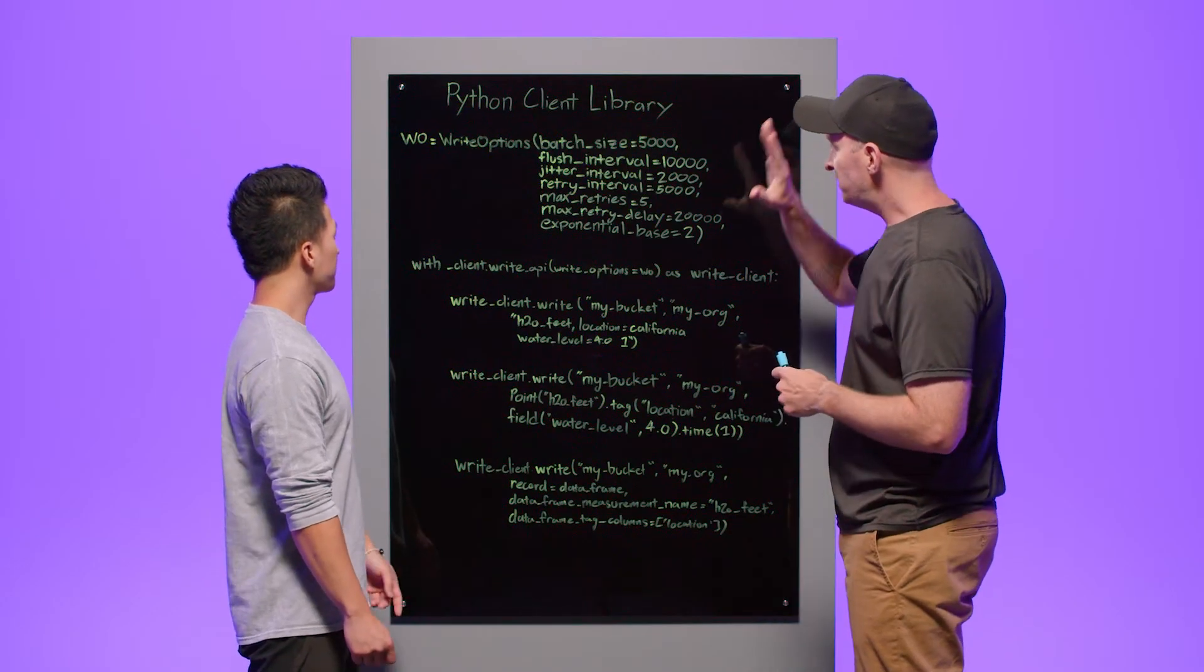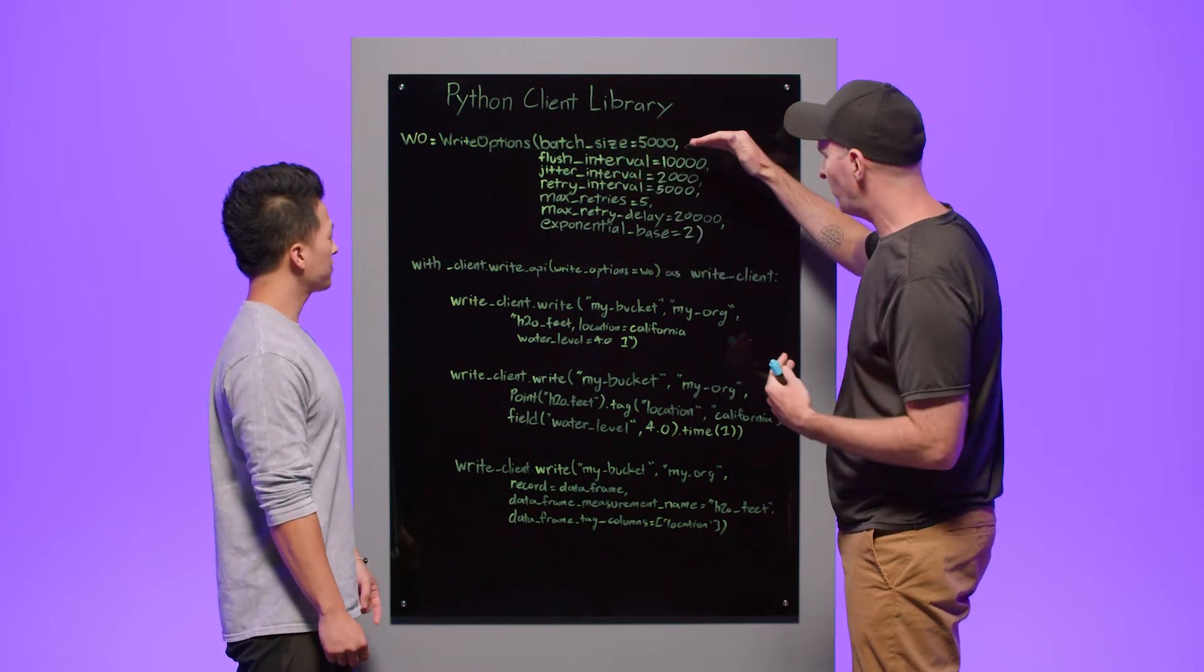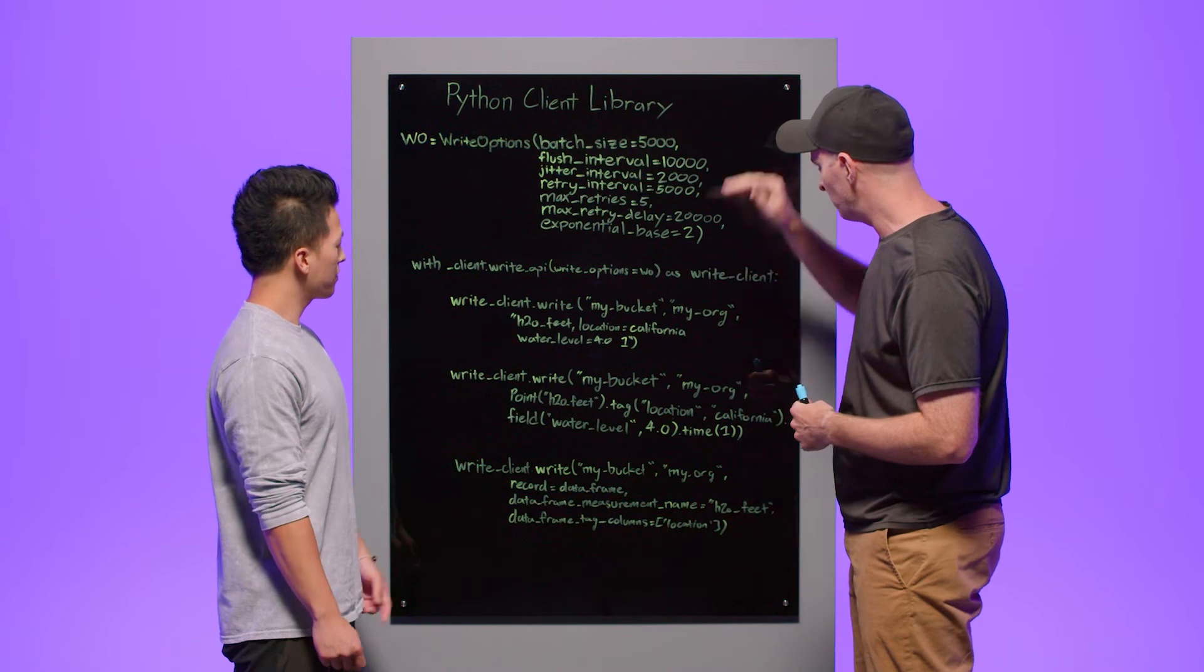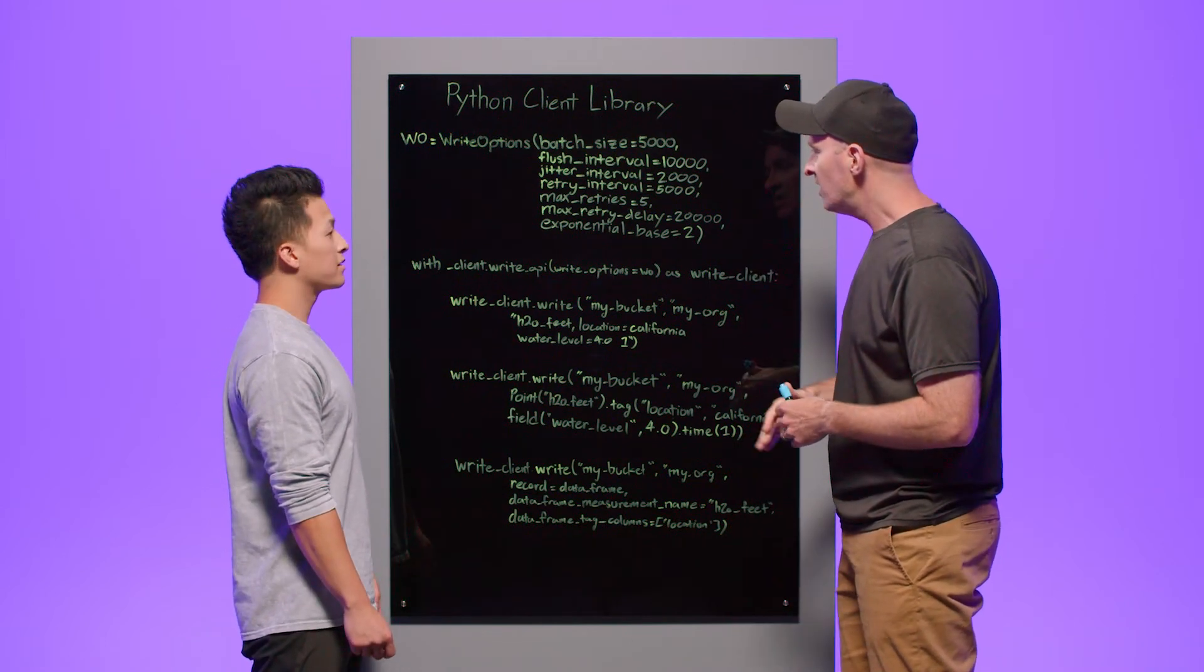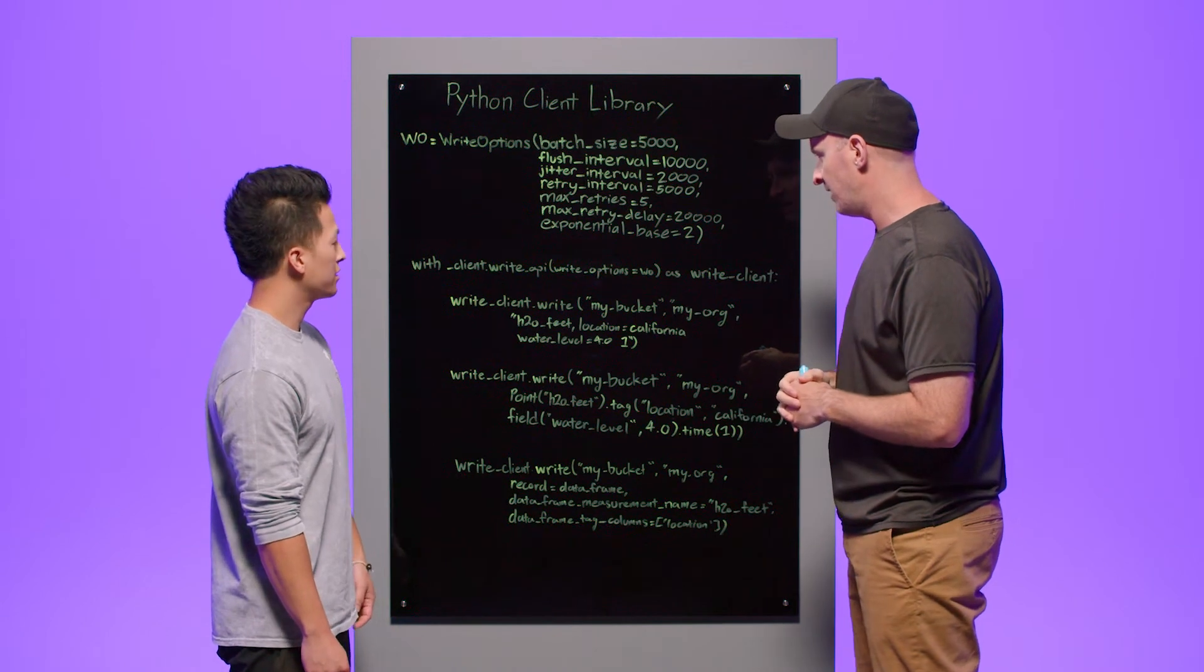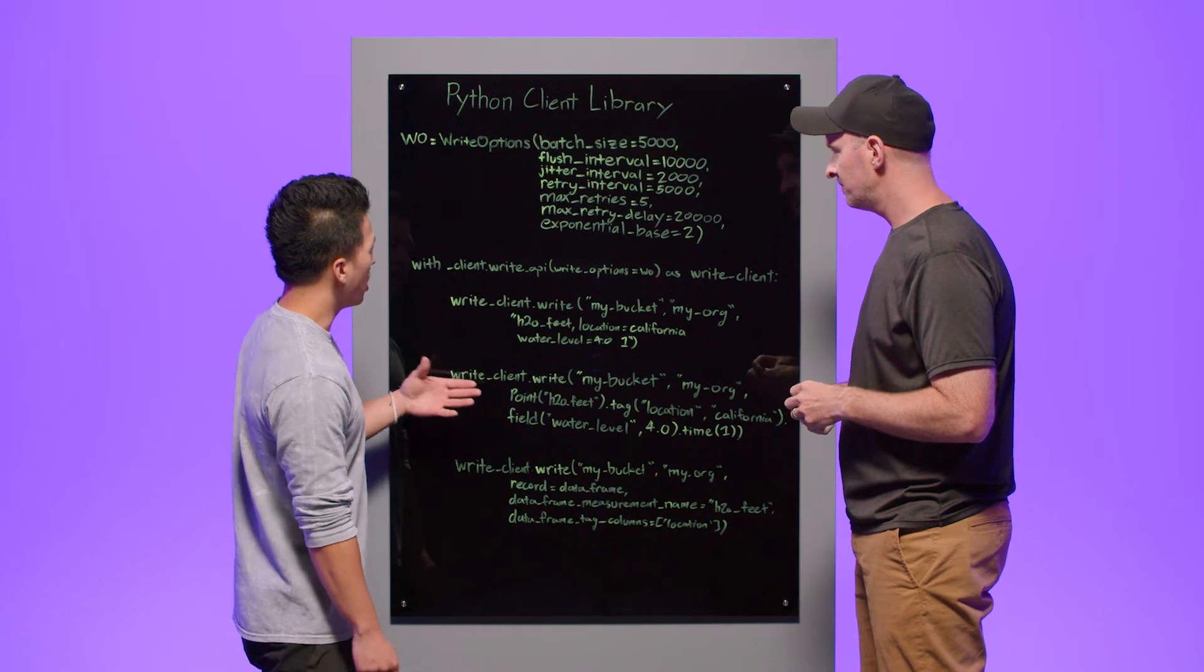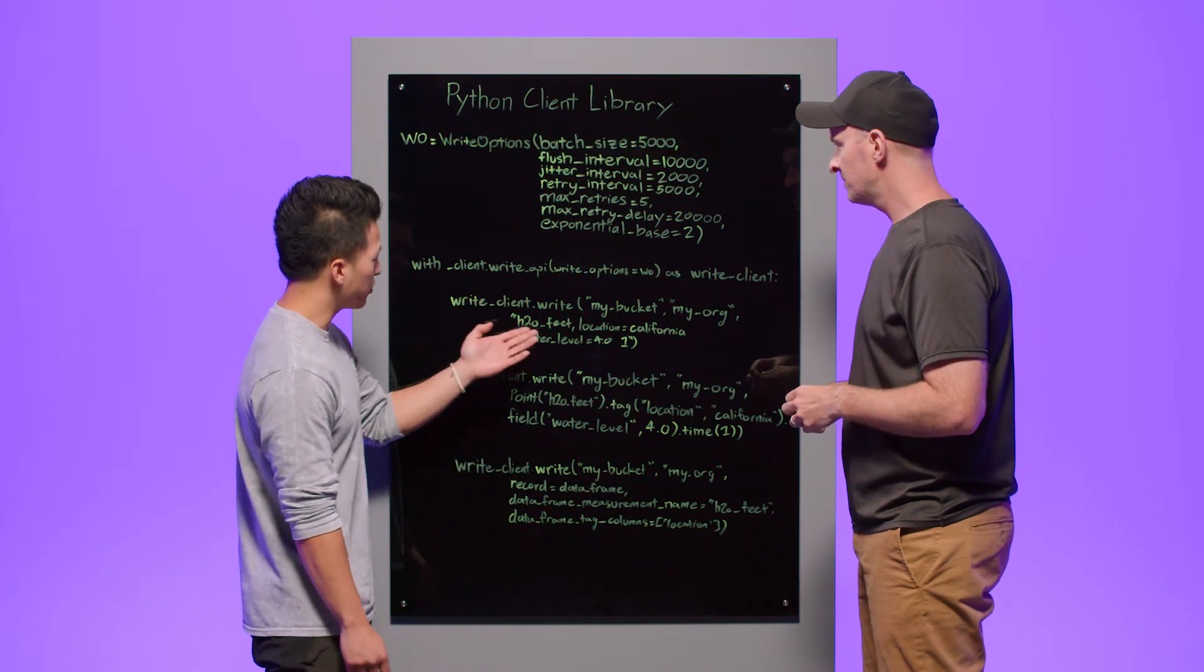All right, so we've established, like I said, that we want to do batch. We've configured our batch and now we need to write some data points. We need to fill up those 5,000 data points if we can get to it. So what are our options for writing data? Yeah, so as you can see here, we'll go ahead and first instantiate our write API class. And within the write API class, you'll have a write function.